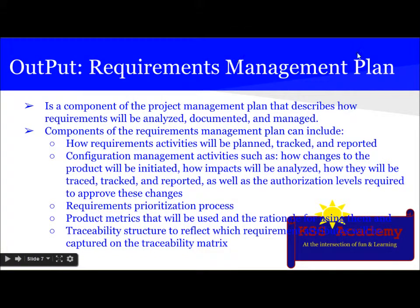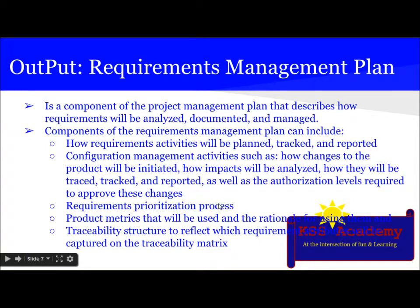The second output is the requirements management plan. It is a component of the project management plan that describes how requirements will be analyzed, documented, and managed. Its components include: how requirement activities will be planned, tracked, and reported; configuration management activities such as how changes to the product will be initiated, how impacts will be analyzed, how they will be tracked and reported, and the authorization level required to approve changes; the requirements prioritization process; product metrics that will be used and the rationale for using them; and the traceability structure reflecting which requirement attributes will be captured on the traceability matrix.